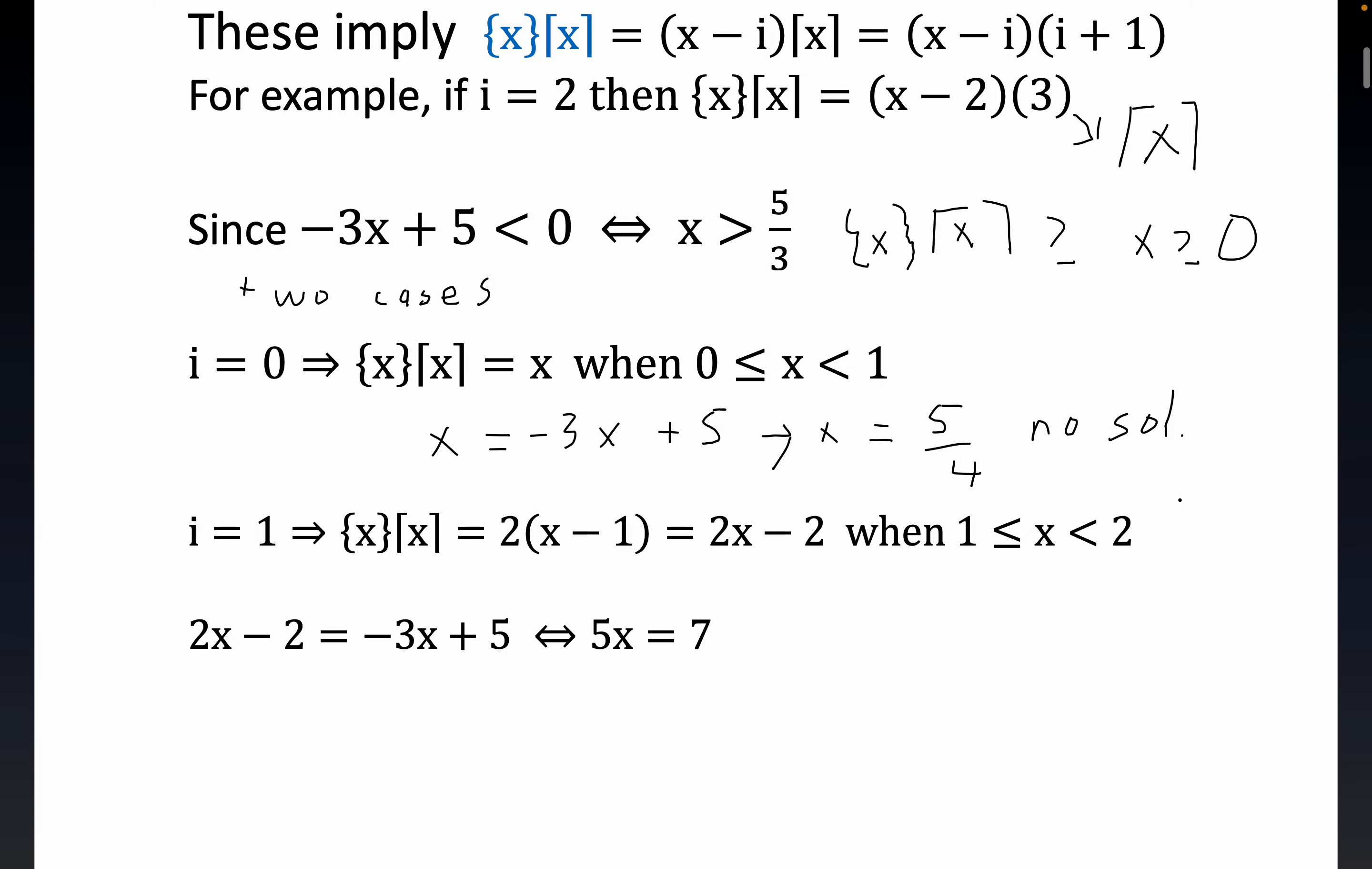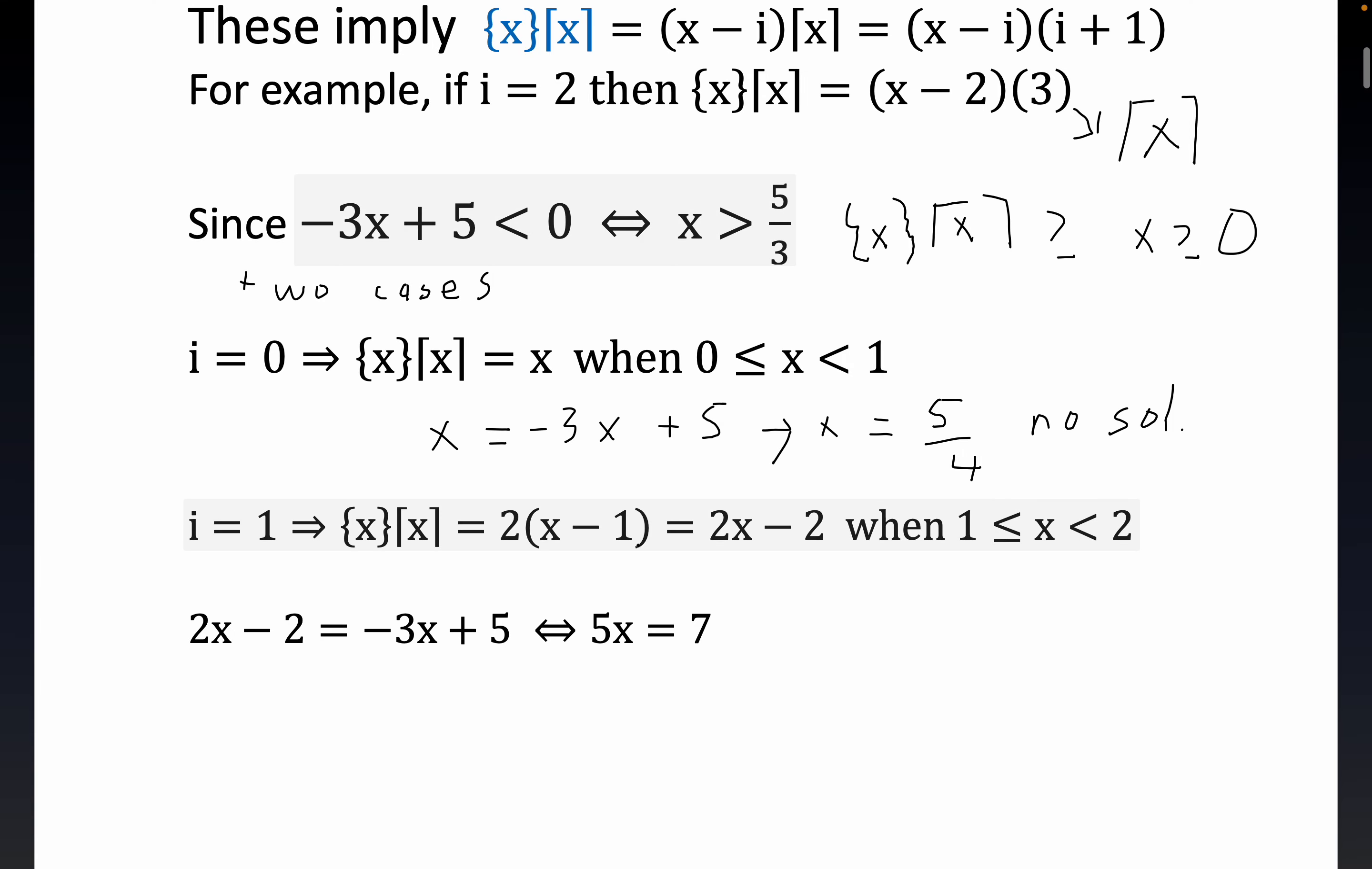Now let's take it to i equals 1. Now you see, again, using our result, we get 2. The ceiling of a number between 1 and 2 is 2. That's where this 2 comes from. And, of course, the fractional part is x minus 1 when i is equal to 1.